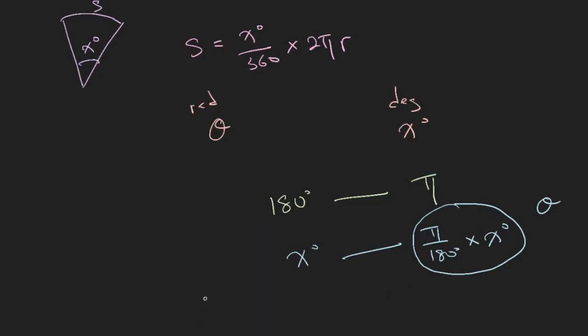So since theta is equal to pi over 180 degrees times X degree, if we make X to be the subject of the formula, you will have theta times 180 degrees divided by pi. Now, let's put what we have here back into your equation above.